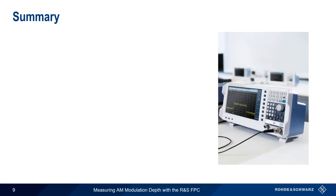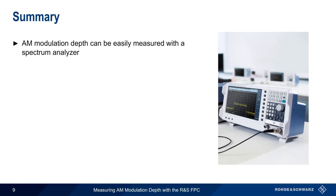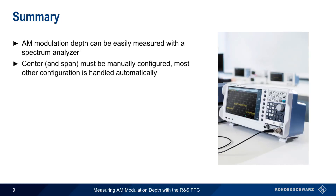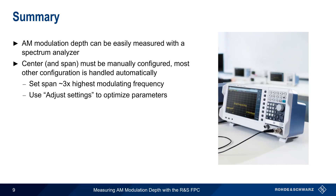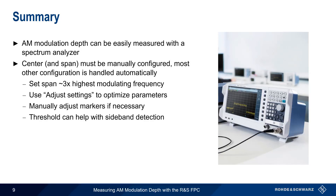Let's summarize what we've covered. AM modulation depth can be easily measured with a spectrum analyzer such as the FPC. Although most of the measurement is automated, the center frequency and the span will need to be manually configured. A good rule of thumb is to set the span to three times the highest modulating frequency. Marker placement and other settings like resolution bandwidth are automatically configured through the Adjust Settings button, but all three markers can be manually placed if need be. Setting a threshold can prevent spurious signals or noise from being incorrectly detected as sidebands.